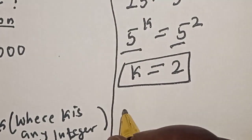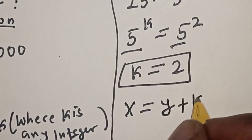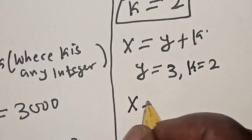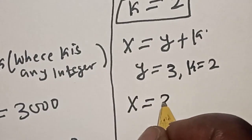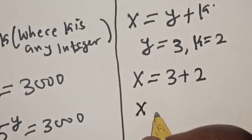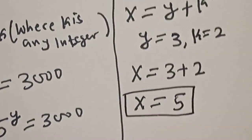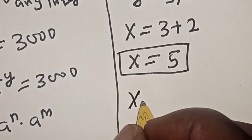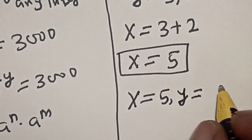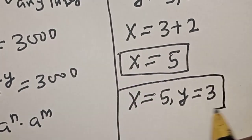We've gotten the value of k, which is equal to 2. But remember that x is equal to y plus k. Now, x is equal to 3 plus 2, therefore x is equal to 5. Our final answers are x is equal to 5 and y is equal to 3.